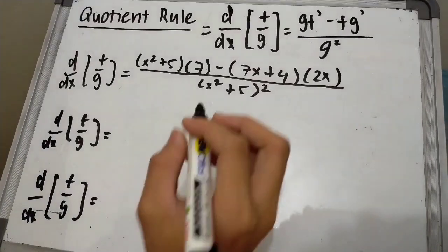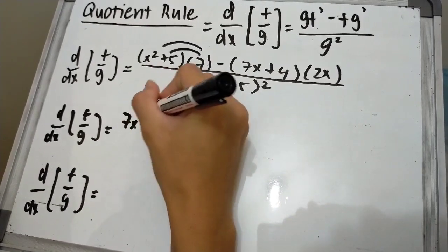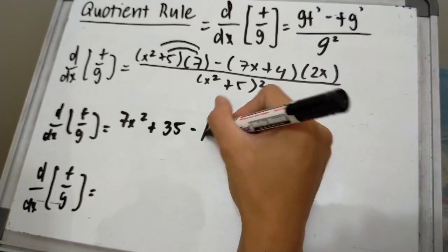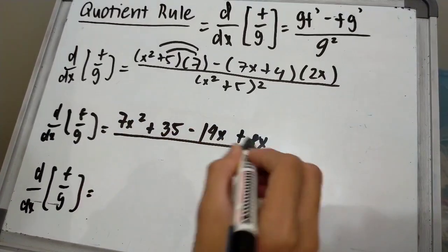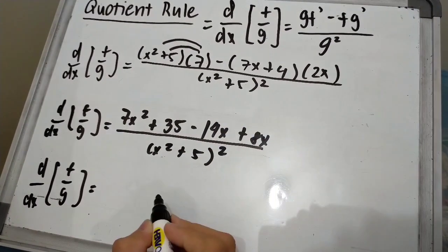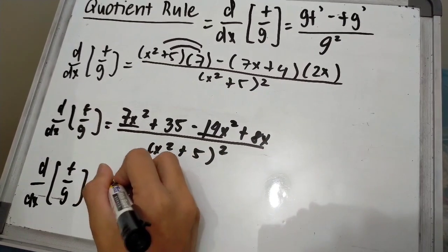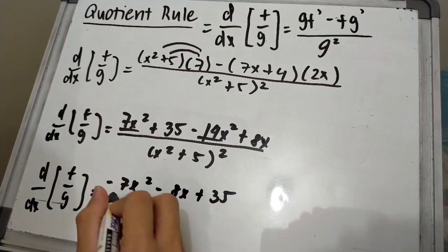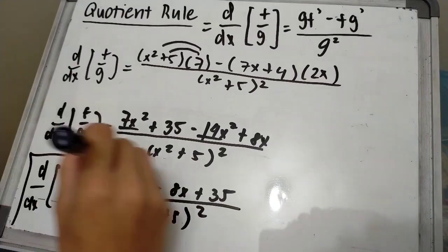The next step is distribute 7, which will be 7x² + 35 - 14x² - 8x over (x² + 5)². After this, you must combine like terms, which will become -7x² - 8x + 35 over (x² + 5)². And this will be your final answer.